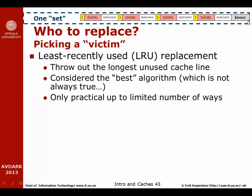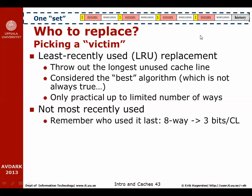If you have many cache lines in the set — if the associativity is high — the extra bits needed for history may introduce an unnecessarily large overhead. Also, this history requires you to read the previous state of the set and then after an access store a new history back, so it's a read-modify-write access, and that's not always appreciated by people designing fast caches.